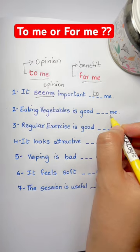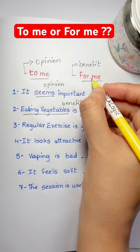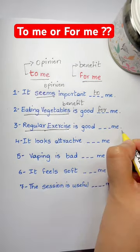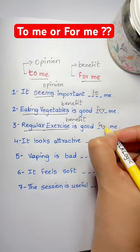Eating vegetables is good blank me. Eating vegetables is a benefit, so for benefit we use 'for.' Eating vegetables is good for me. Similarly, regular exercise is a benefit, so regular exercise is good for me.